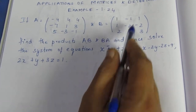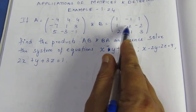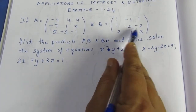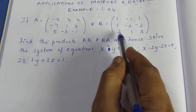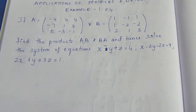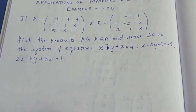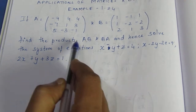The coefficient matrix entries are: 1, minus 1, 1 for the first row; 1, minus 2, minus 2 for the second row; and 2, 1, 3 for the third row. So this is how to solve this equation.